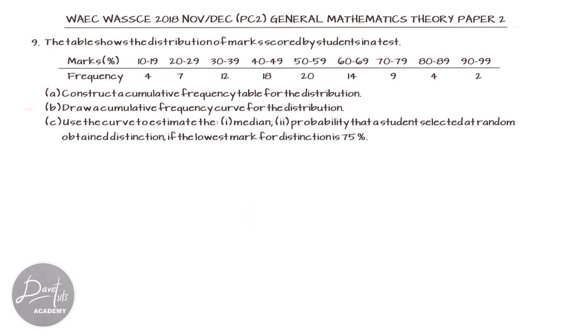In this question, we are given the distribution of marks scored by students in a test. We want to construct a cumulative frequency table for the distribution, then draw a cumulative frequency curve or OGIF, and then use that to estimate the median and the probability that a student selected at random obtained distinction if the lowest mark for distinction is 75%.